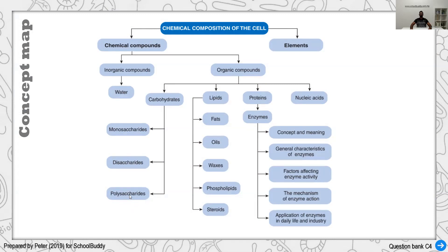Next we have lipids: fats, oils in liquid form, waxes which are semi-solid, phospholipids found in the plasma membrane, and steroids which are examples of hormones. For proteins, we saw the enzyme concept — the lock and key — and the enzyme characteristic of being reused again and again. Factors affecting enzymes include pH, temperature, substrate concentration, and enzyme concentration. The mechanism shows substrate combining with enzyme to form a complex and then produce a product. Finally, we have nucleic acids, which is DNA, and we will further learn about this in the chapter on inheritance in Form 5.